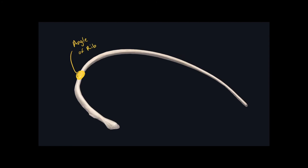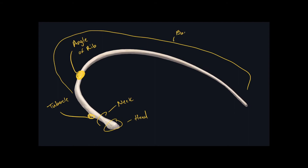We can quickly review all the other landmarks. Here's the head, and here we have the neck — the narrowing just after the head. We have this small bump called the tubercle of a rib, and this whole portion called the body of a rib. We can't see it from this view, but the subtle indentation on the inferior border of the rib is called the groove of a rib. Those are all the landmarks we need to know for ribs. Now we can move on to the sternum.